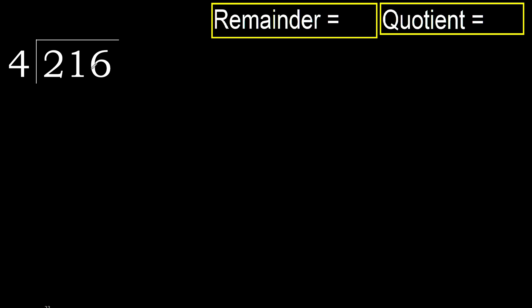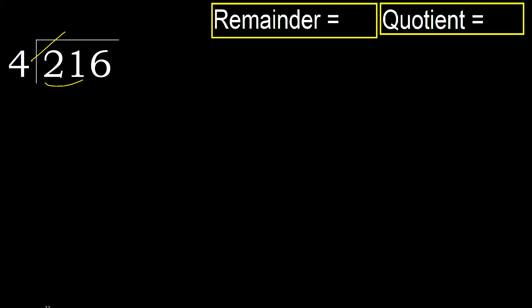216 divided by 4. 2 is less, therefore next. 21 is not less, therefore with 21: multiply by which number is nearest to 21 but not greater.